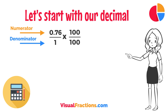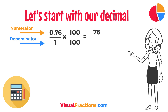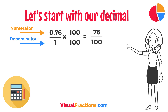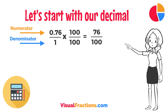So, 0.76 times 100 gives us 76, and 1 times 100 gives us 100. This translates 0.76 to the fraction 76 over 100.